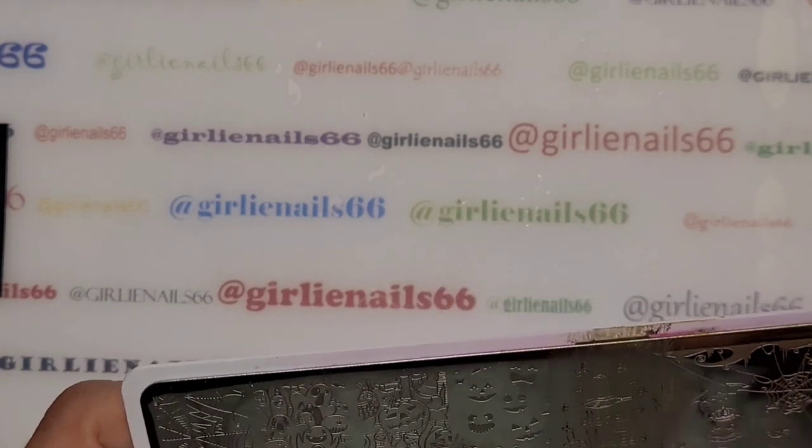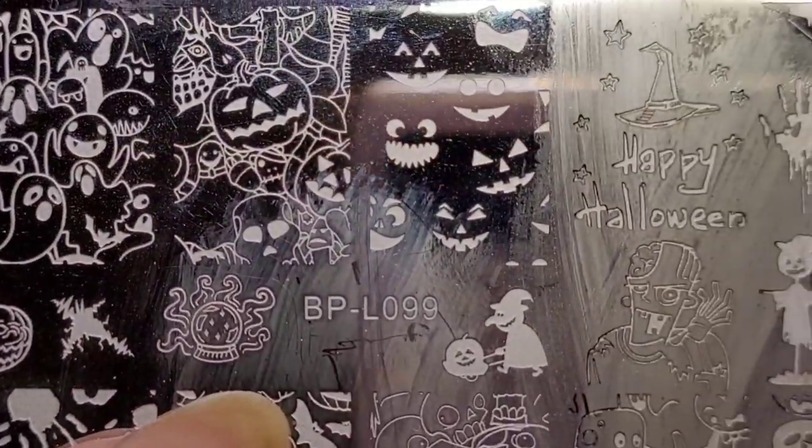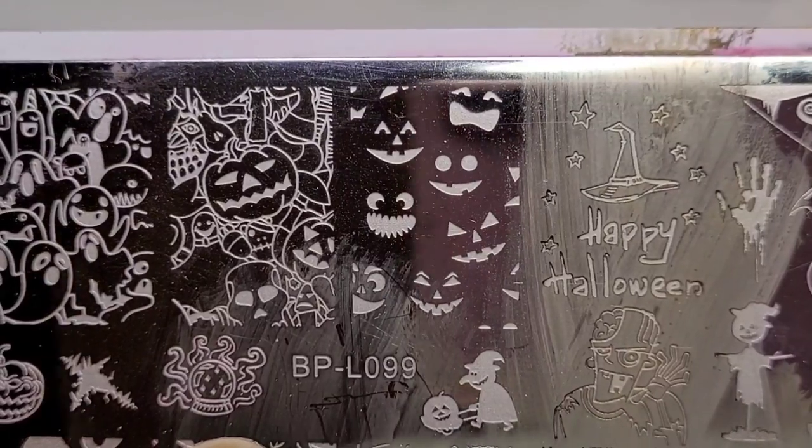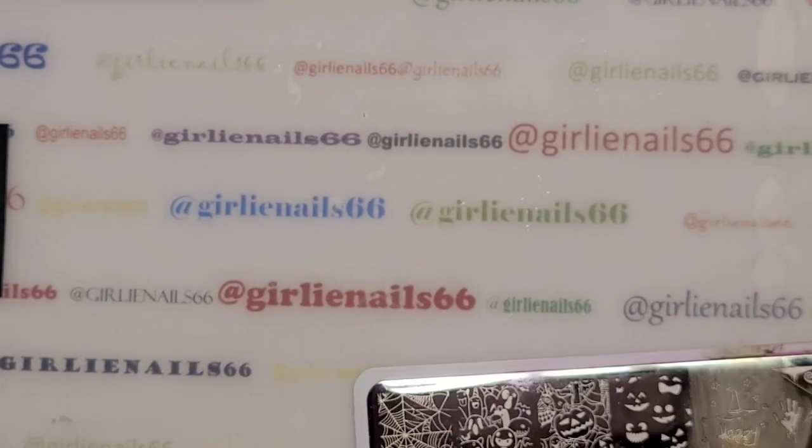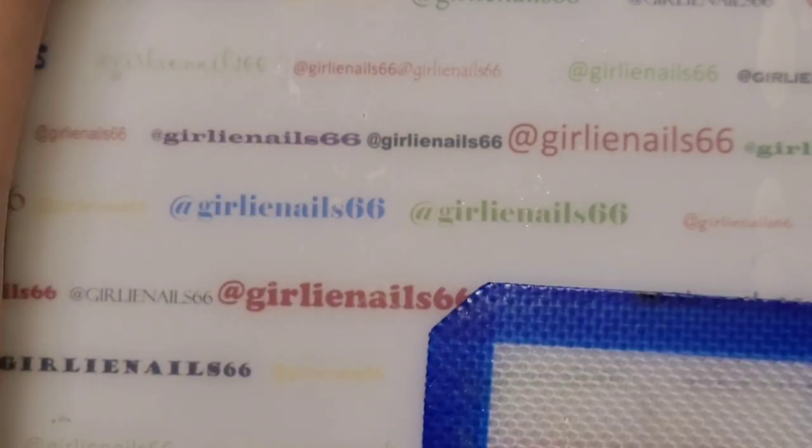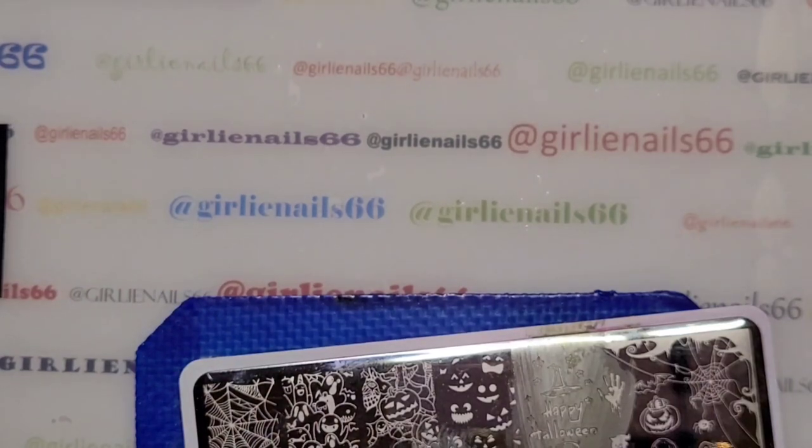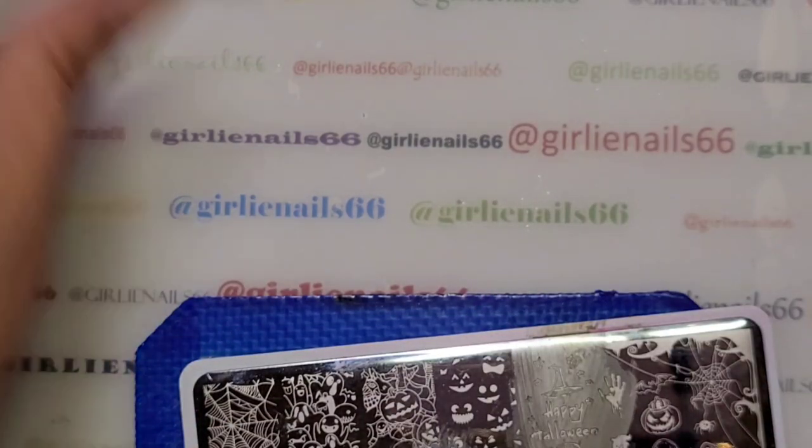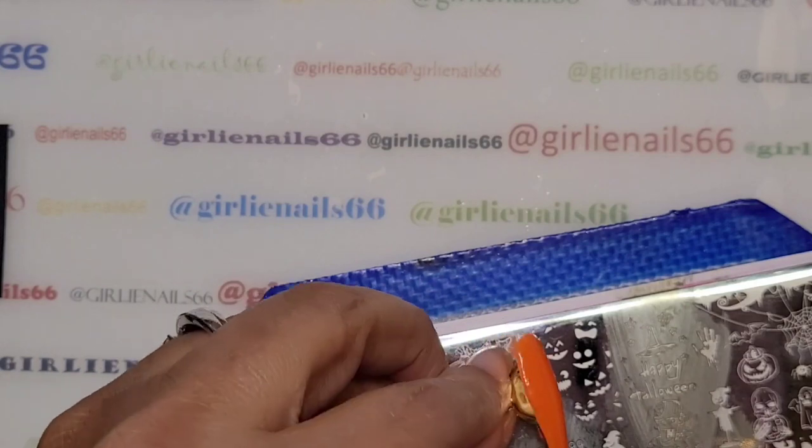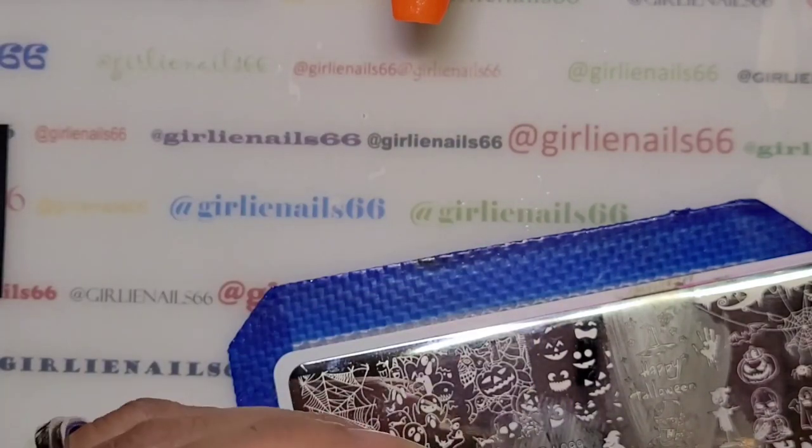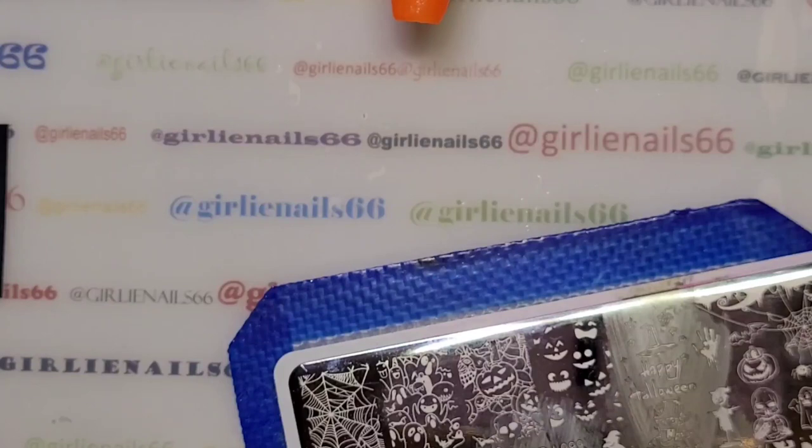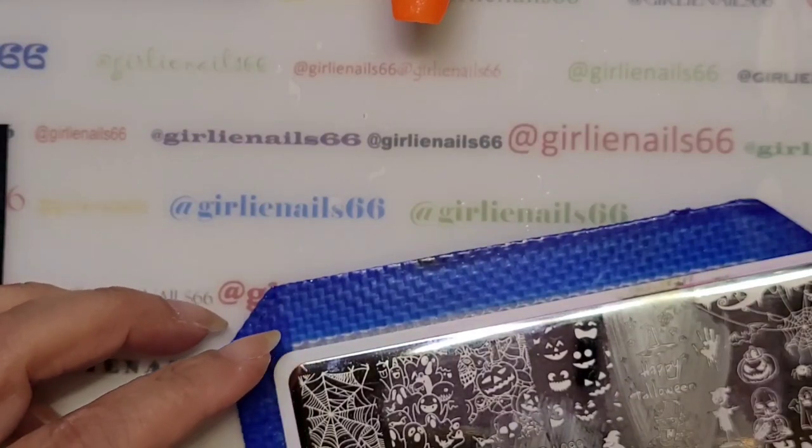The stamping plate I'm going to use is BP-L099, and I kind of like this image. We're going to do some pumpkin faces. I wanted to do something a little different but pumpkin-like. So I'm going to use Maniology Sticky Black stamping polish. I'm hoping this image will fit the big nails, we will see shortly.